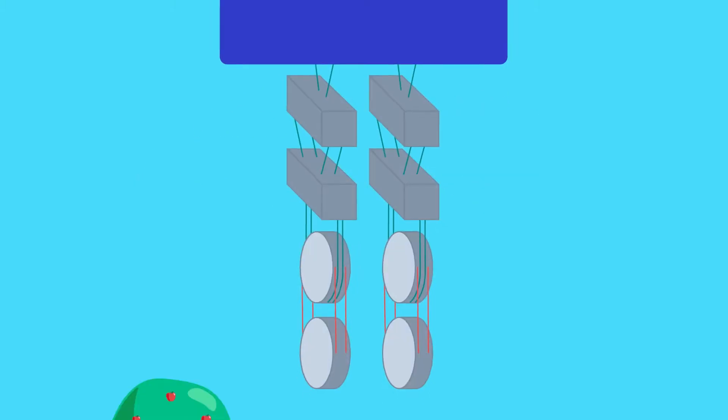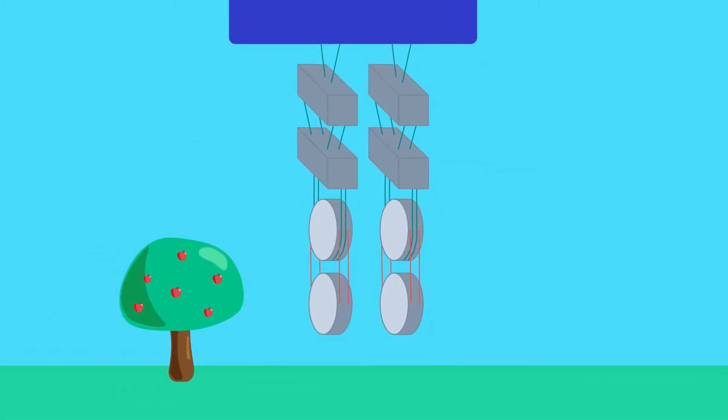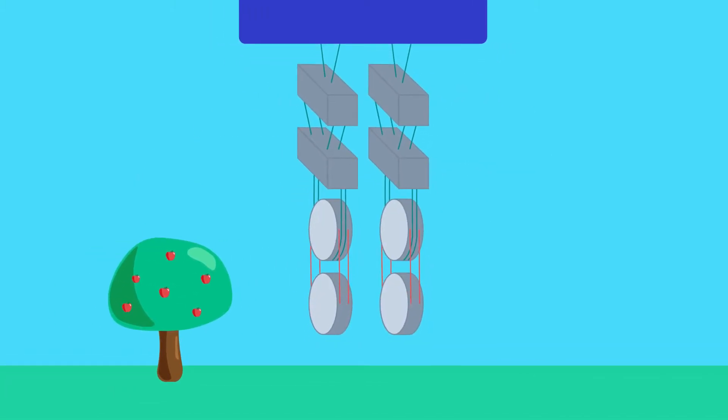An active control system moves the whole mirror system to counteract the lower frequency movements. There are also important techniques to compensate for the expansion of the mirrors caused by the laser heating them up, and baffles in the beam lines reduce scattering of the laser.